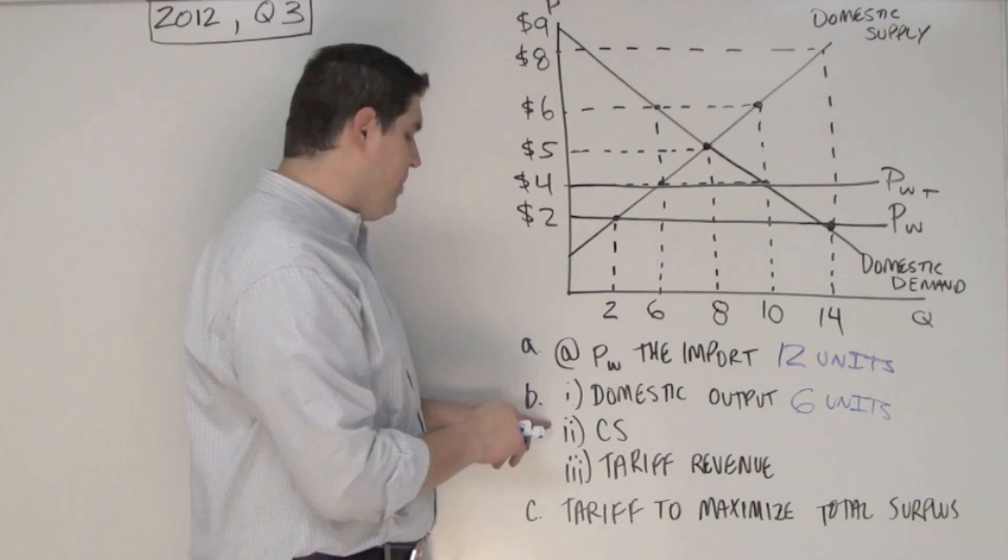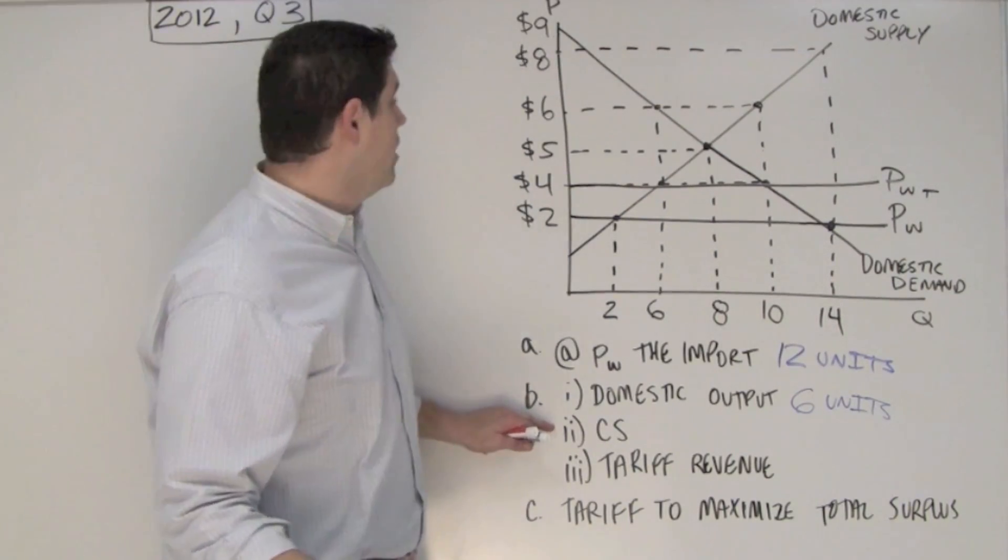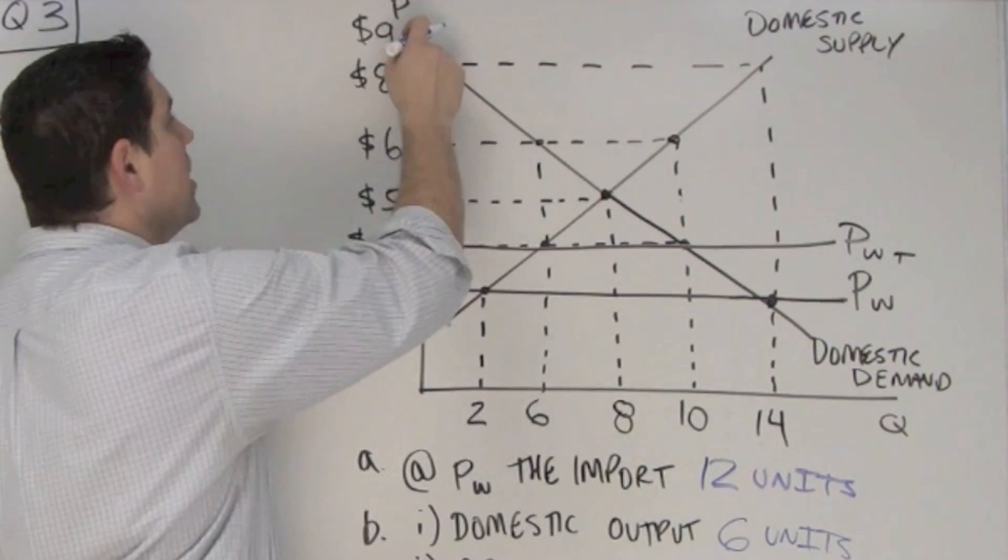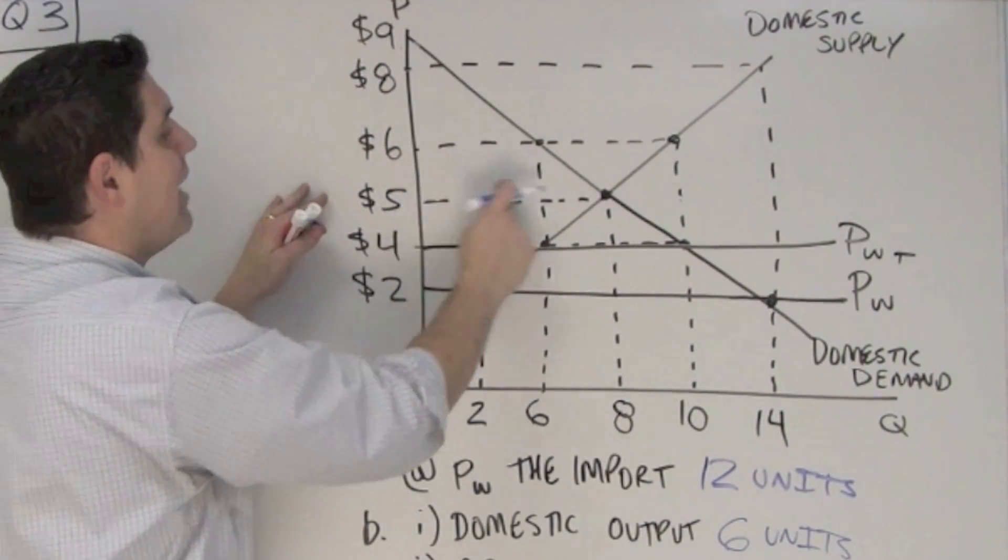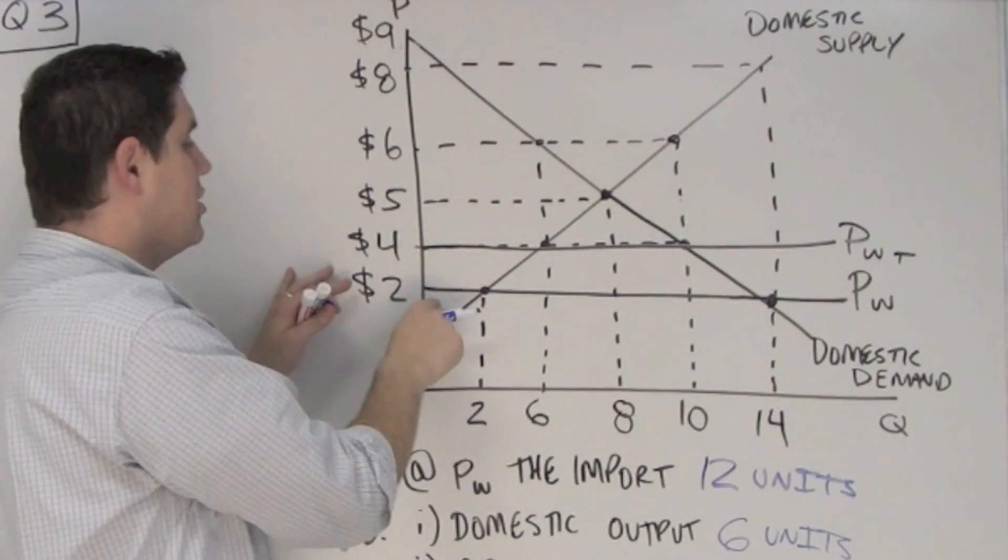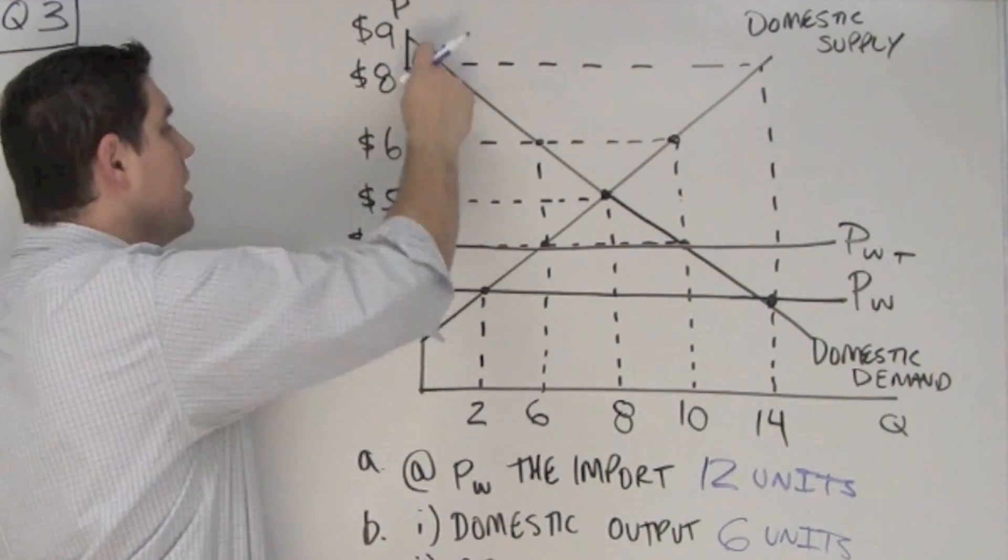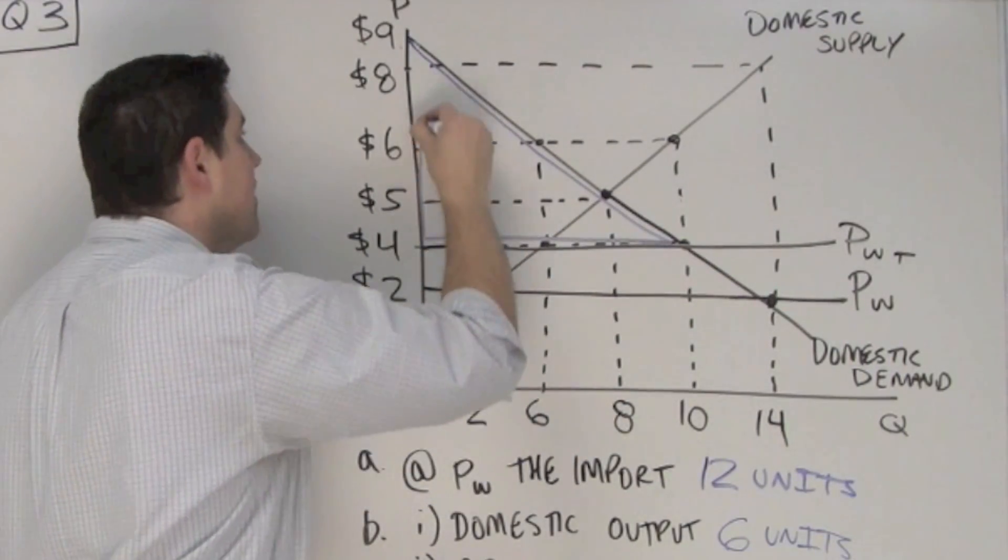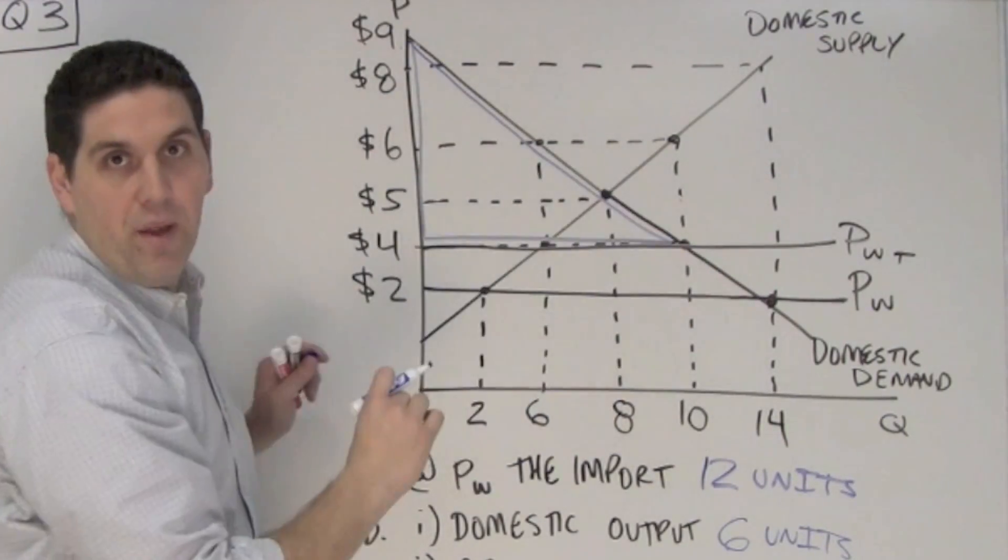Now with the tariff, B2 is asking where's consumer surplus, and how much is it? Well consumer surplus is the difference between what people are willing to pay and what they did pay. What they're willing to pay is up here. What they did pay is not the equilibrium in the market domestically. It's also not 2, it's with the tariff, so it's 4. So willing to pay, did pay, all the way down here represents consumer surplus. That big triangle is consumer surplus.